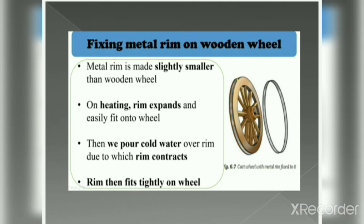The wooden wheels of a cart have a metal rim around them. The metal rim is made slightly smaller than the wooden wheel. On heating, the rim expands and easily fits onto the wheel. Then we pour cold water over the rim, causing it to contract, and the rim fits tightly on the wheel. This is how the metal rim is fixed on the wooden wheel.